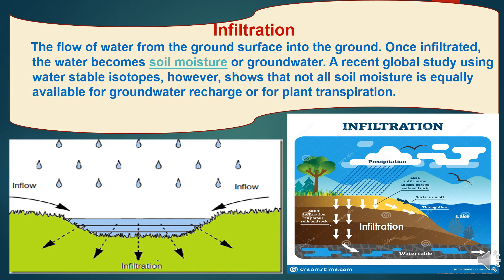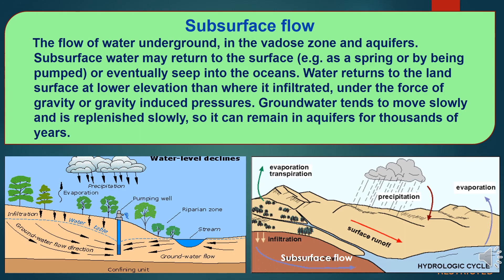The next important component is infiltration. The flow of water from the ground surface into the ground is called infiltration. Once infiltrated, the water becomes soil moisture or groundwater. A recent global study using water stable isotopes shows that not all soil moisture is equally available for groundwater recharge or for plant transpiration. The flow of water underground in the water source zone and aquifers is called subsurface flow. Subsurface water may return to the surface or eventually seep into the oceans under the force of gravity. Groundwater tends to move slowly and can remain in aquifers for thousands of years. The vadose zone, also termed the unsaturated zone, is the part of earth between the land surface and the top of the phreatic zone, where groundwater is available in soil pores at atmospheric pressure.